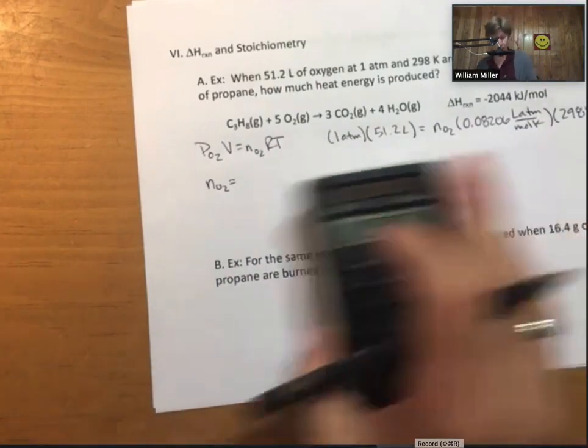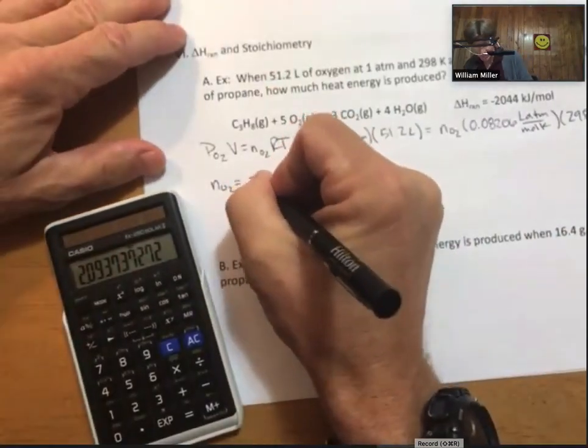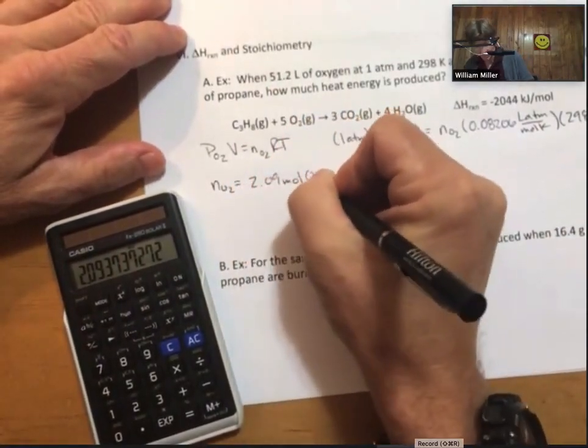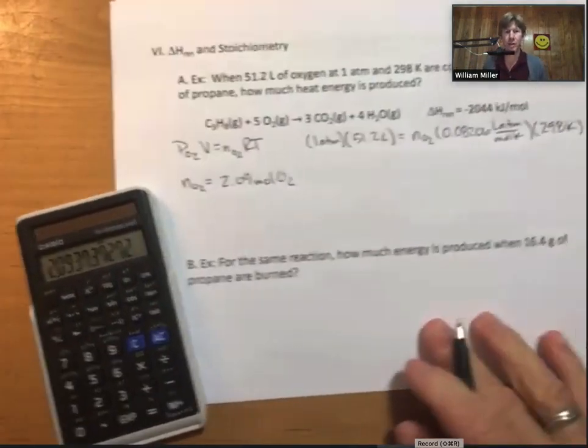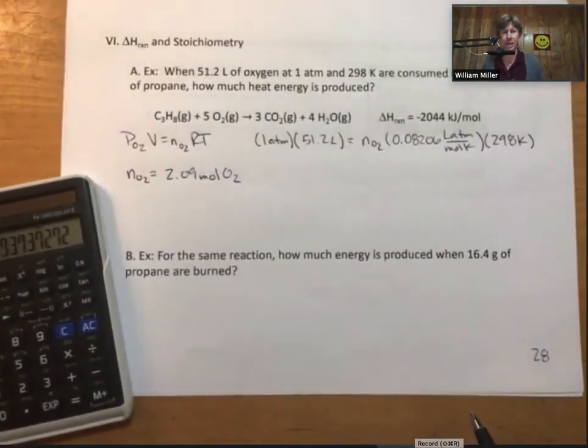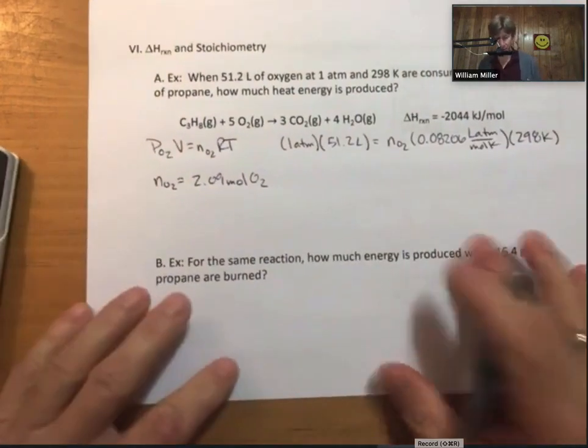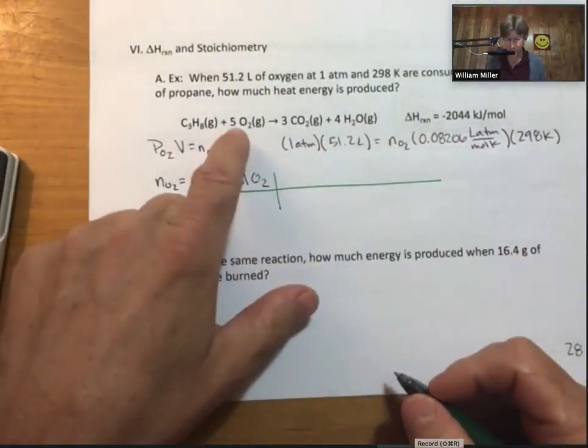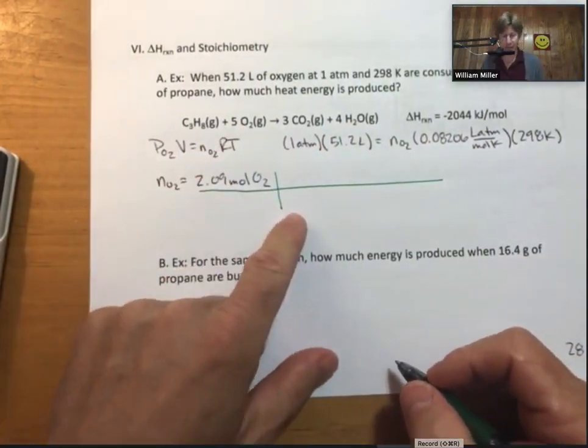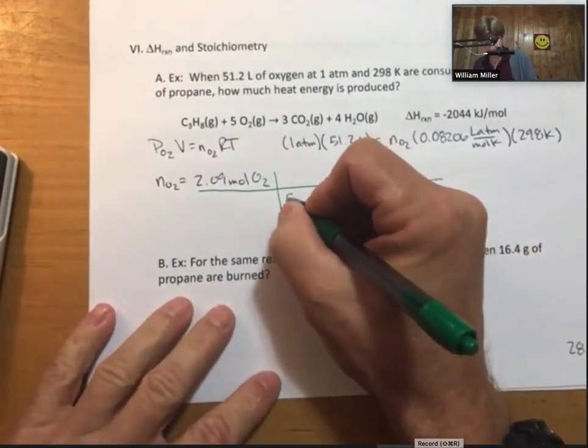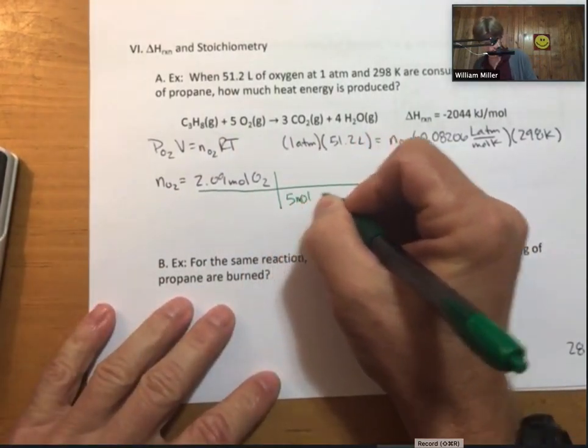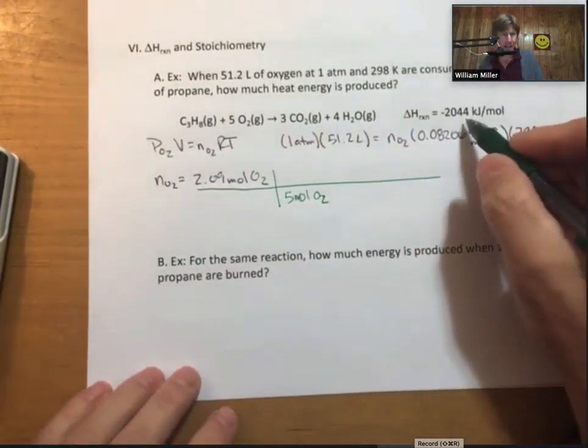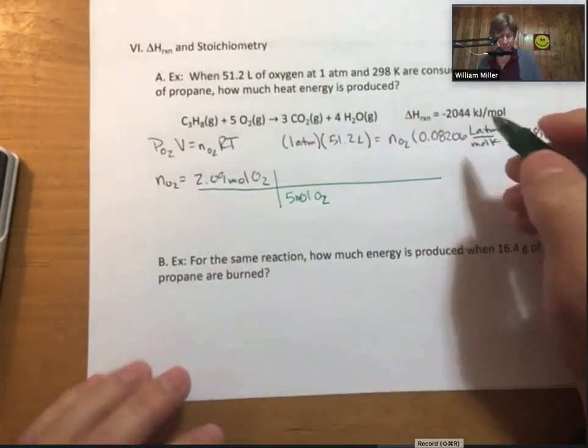I get 2.09 moles. As you know, I always do my ideal gas law separate from my picket fence, my system for doing stoichiometry problems. So I'll take my 2.09 moles. I know that for oxygen, for every 5 moles of oxygen, I get negative 2,044 kilojoules.